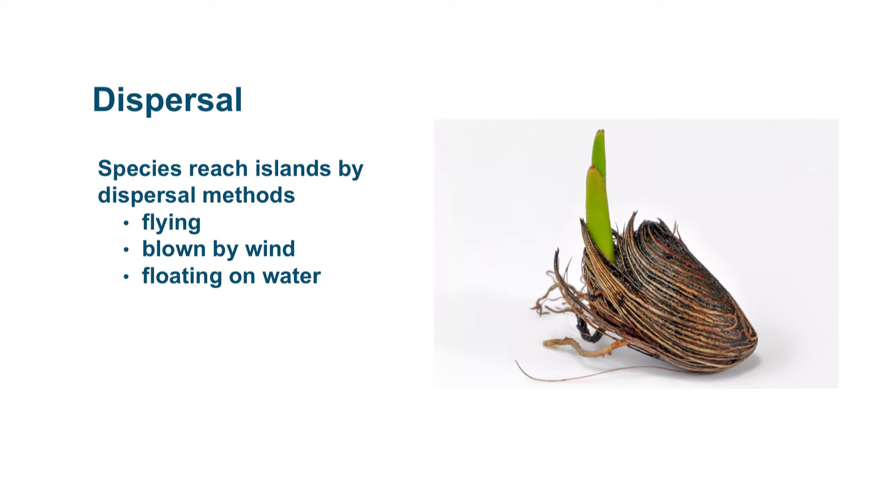Dispersal just means how do species reach an island. There are actually several methods. Some of the most common are by flying there, blowing by wind, or floating around in the water.